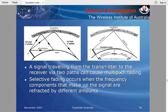A signal traveling from the transmitter to the receiver via two paths can cause multipath fading. You have a ground wave and a sky wave via the ionosphere. These two signals can add up and either increase the signal strength, decrease it, or cause fading.